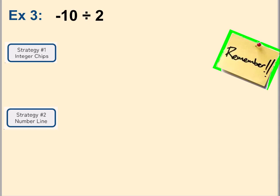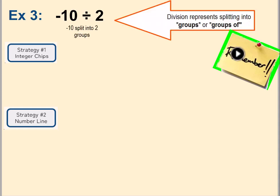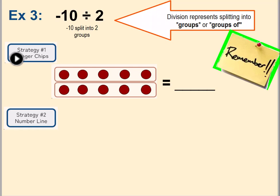Example three: now we're going to talk about division. This is negative ten divided by two. Division represents splitting into groups, so this is negative ten split into two groups. The divisor tells you how many groups you want. We have ten negatives — ten red chips — and we want to split them into two groups. We've taken those ten negatives and split them equally: each group has five negatives. So negative ten divided by two equals negative five.